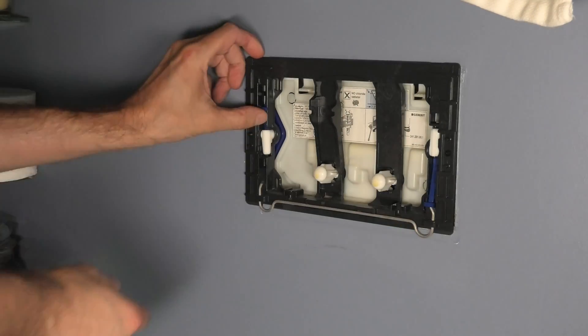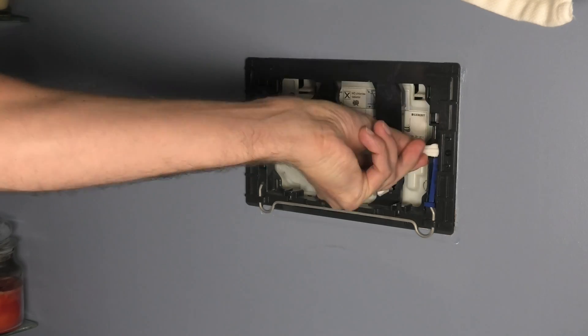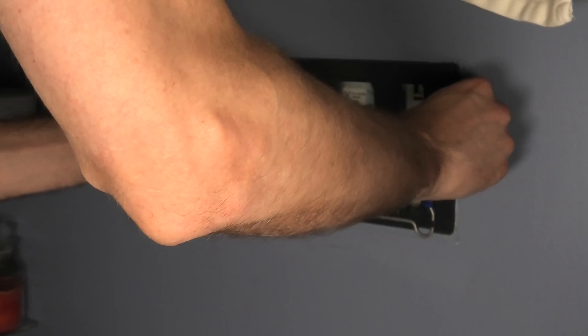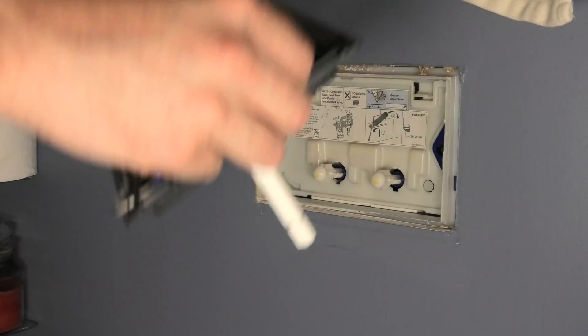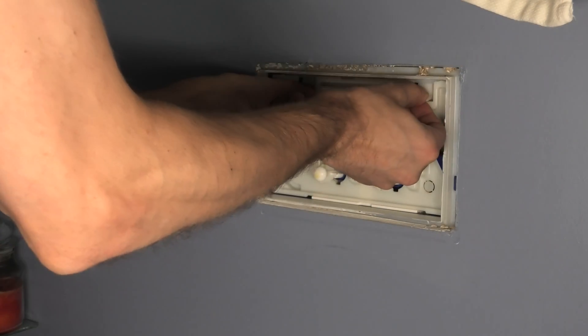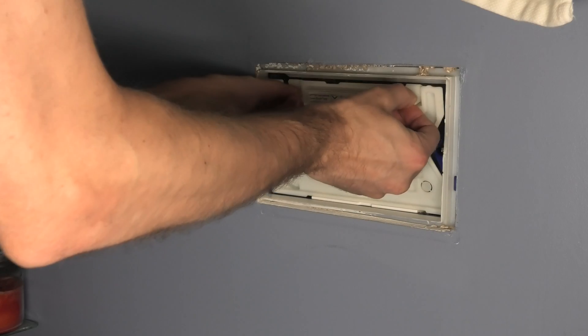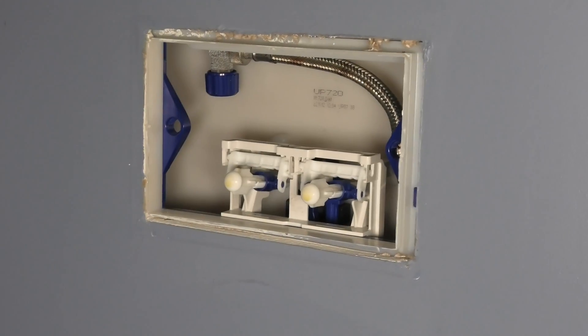Behind there are two more covers, and depending on what model you have this may look a little bit different. In this case I have here these blue tabs that I need to push up and down and then rotate those white tabs, and then I can remove the first cover. And then here we have a second cover. There's also two tabs on the top that I have to push down and I can remove that really easily.